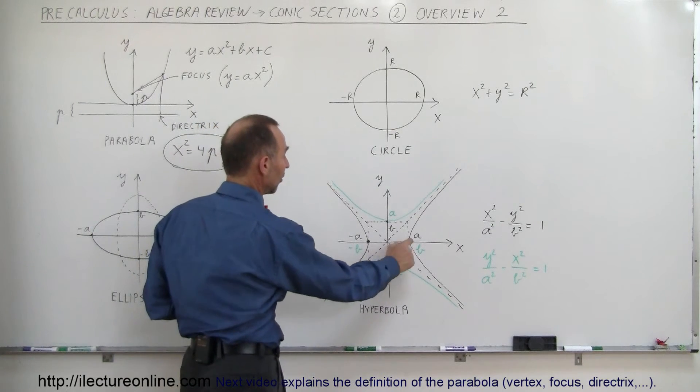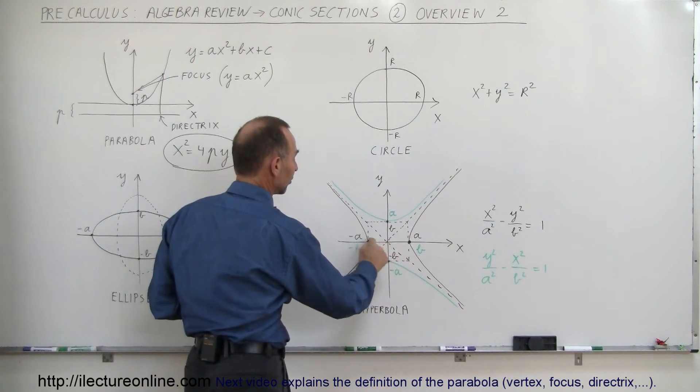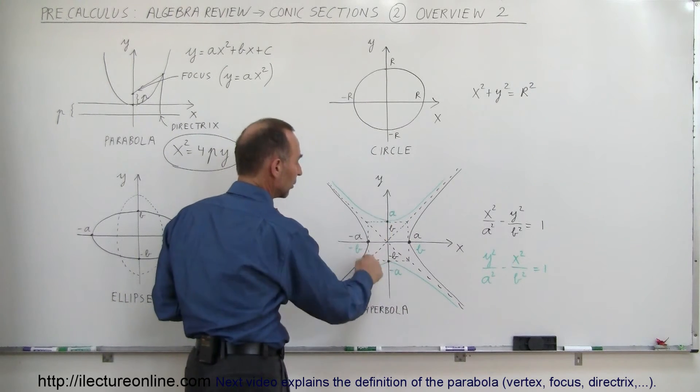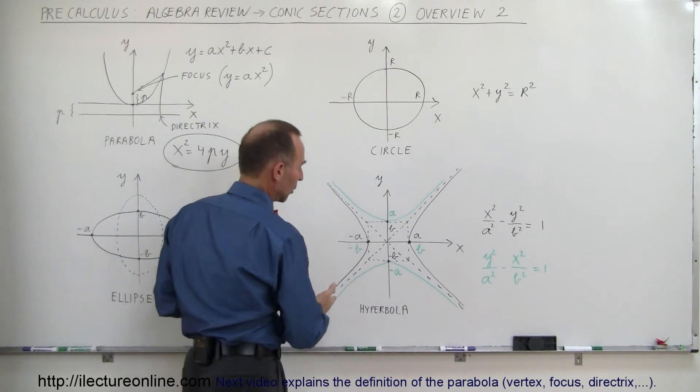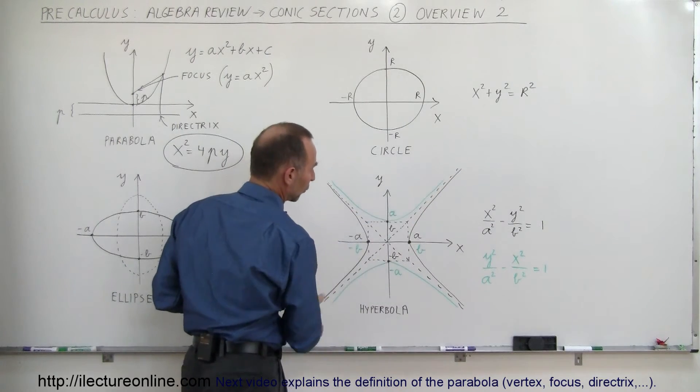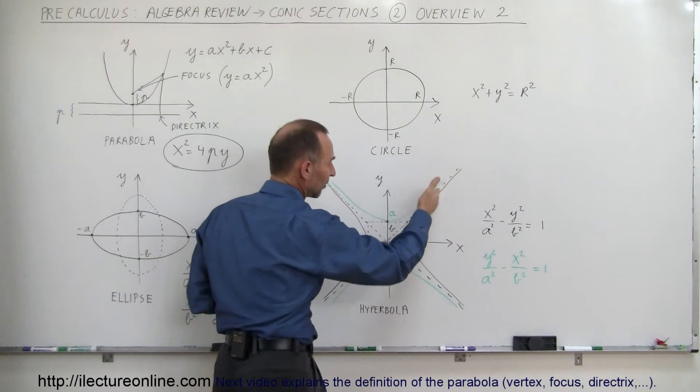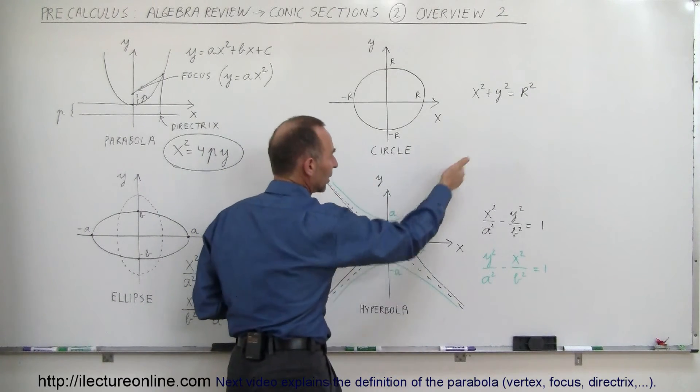Again, we still have the distance from 0 to a and from 0 to negative a, from 0 to b and 0 to negative b. We draw a little rectangle there. We then draw lines that go through the corners of the rectangle. And then when you draw the hyperbola it becomes asymptotic to those rectangular lines.